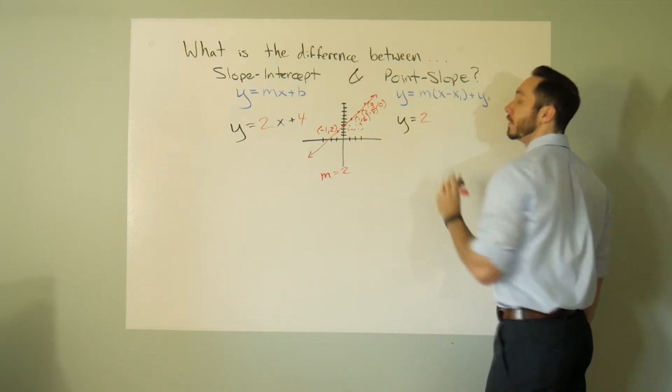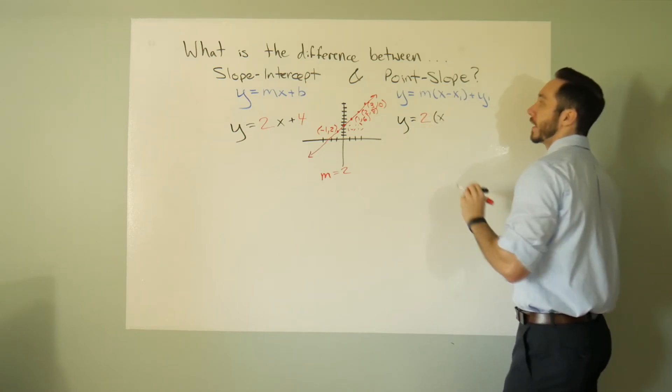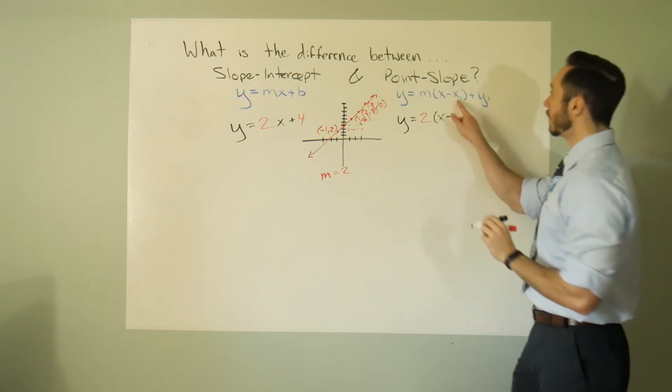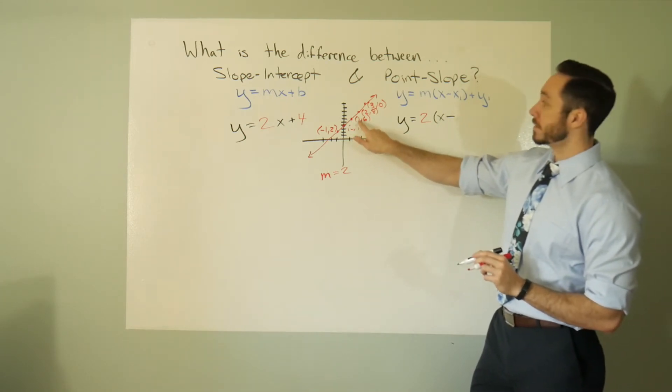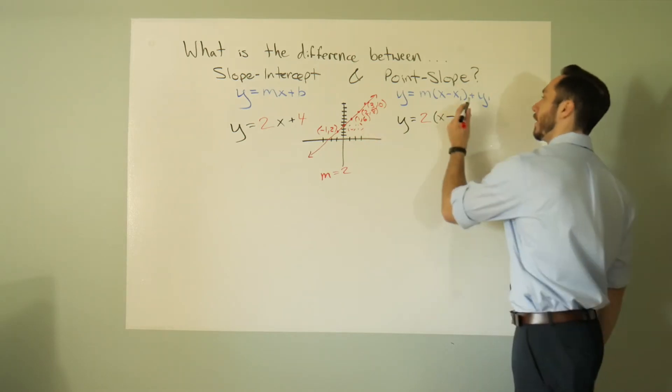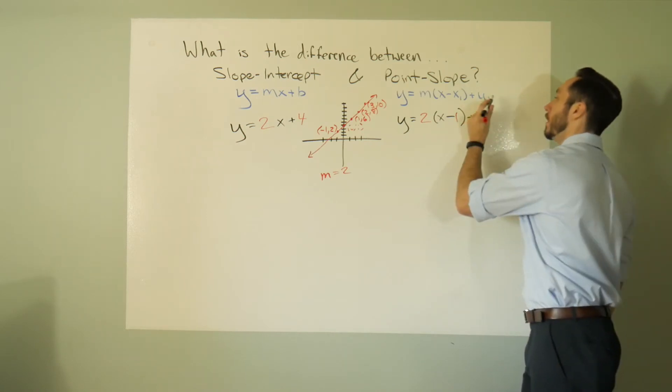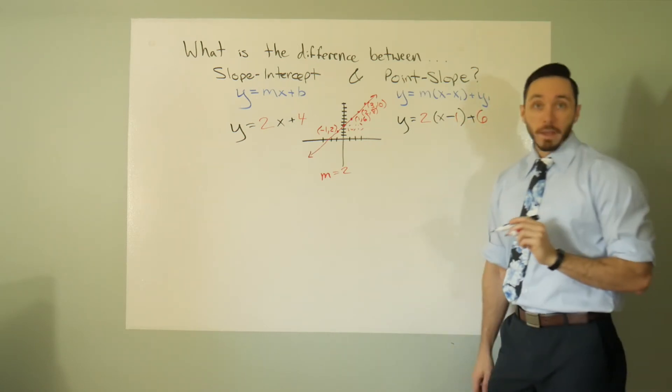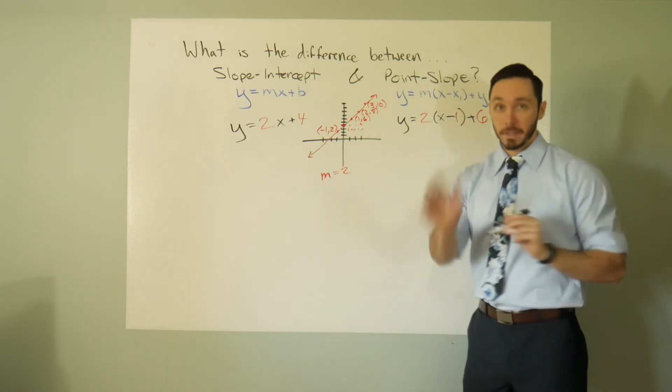Here I have the 2 for the slope, and the way that this works, you would write in parentheses x minus whatever x sub 1 is. Let's do 1 comma 6. So this is my x sub 1 and this is my y sub 1. So this will be my 1 right here and this will be my 6 right here.